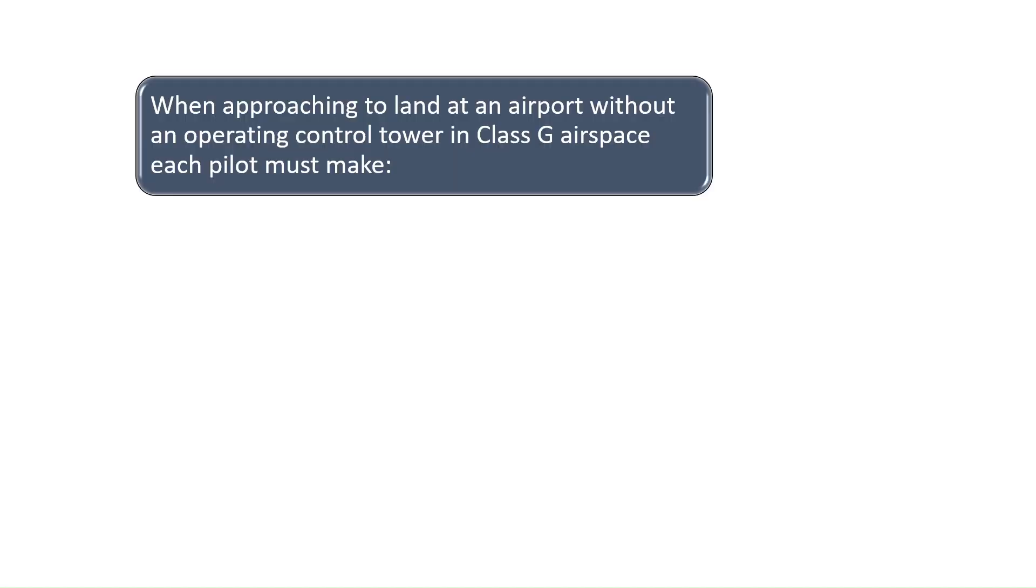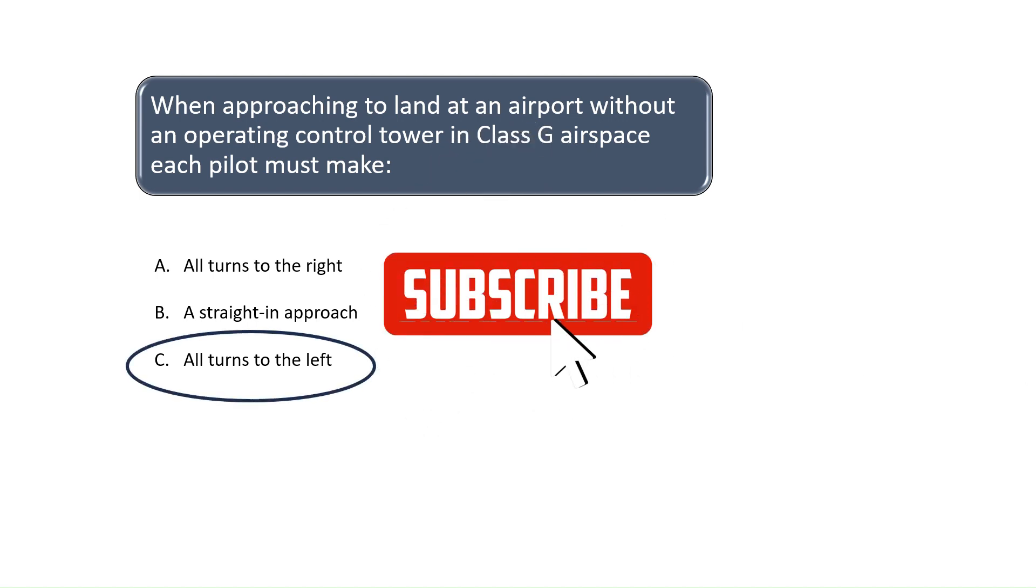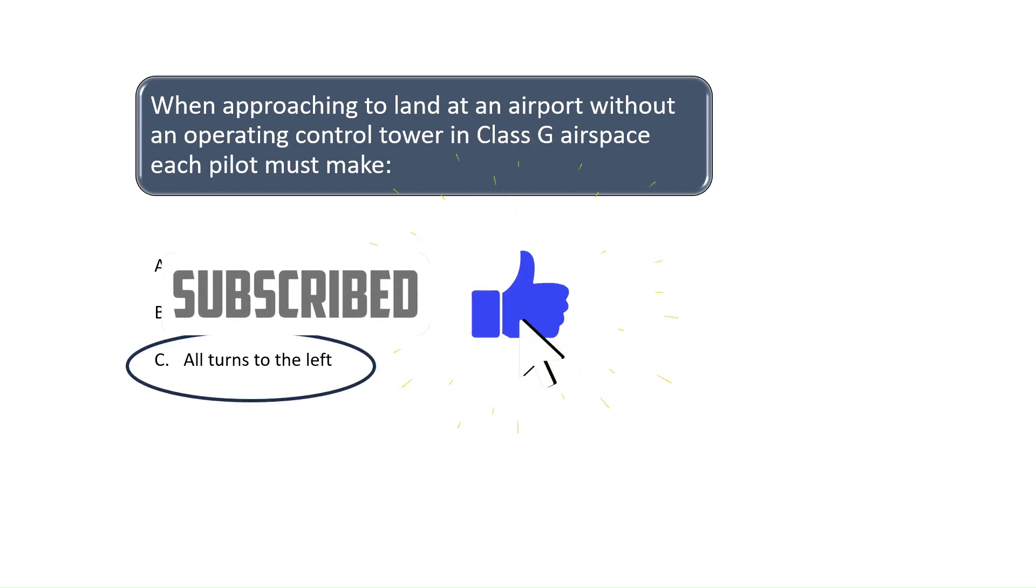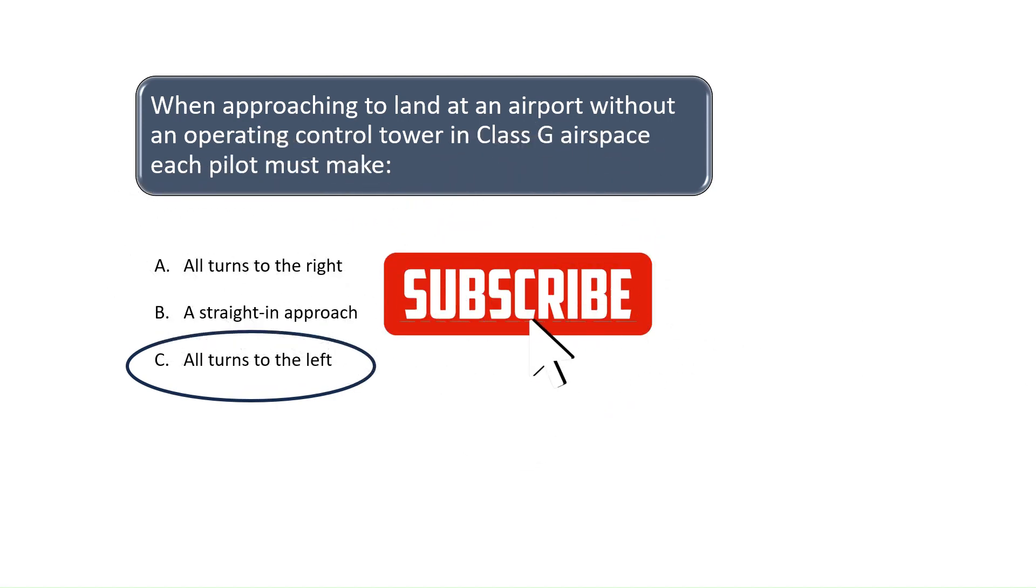When approaching to land at an airport without an operating control tower in Class G airspace, each pilot must make. According to FAR Part 91.126, when approaching to land at an airport without an operating control tower in Class G airspace, each pilot of an airplane must make all turns of that airplane to the left unless the airport displays approved light signals or visual markings indicating that turns should be made to the right. The correct answer is C.